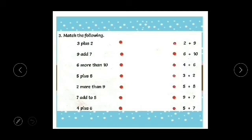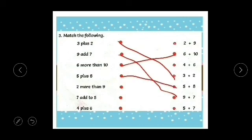Match the following. 3 plus 2, going to match 9 add 7, that means 9 plus 7. 6 more than 10, it means 6 plus 10. 5 plus 8. 2 more than 9, it means 2 plus 9. 7 add to 5. Answer is here: 5 plus 7 or 7 plus 5 is the same. 4 plus 6. That's it.